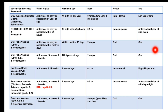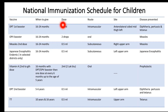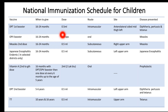The national immunization schedule for children starts with DPT booster — Diphtheria, Pertussis, Tetanus — given at 16 to 24 months, approximately 1.5 to 2 years of age. The dose is 0.5 ml intramuscularly at the anterolateral side of the mid thigh. The OPV booster is also given at 16 to 24 months, as 2 drops orally.